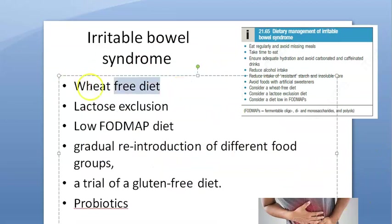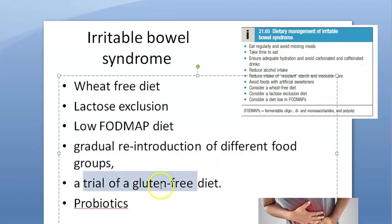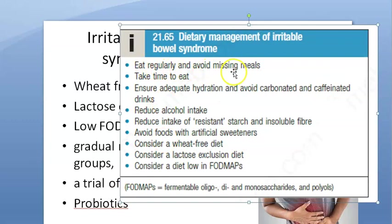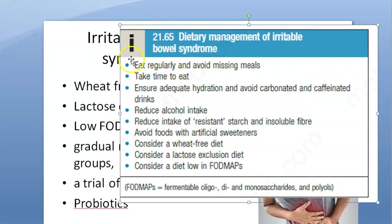For pain and bloating without predominant diarrhea or constipation, if symptoms persist give spasmolytics such as mebeverine, peppermint oil, or hyoscine, along with probiotics and rifaximin. Tricyclic antidepressants like amitriptyline and imipramine can also be used. General dietary advice includes a wheat-free diet, lactose exclusion, and a low-FODMAP diet.